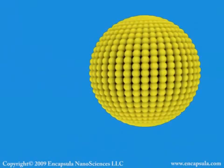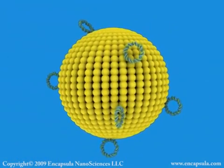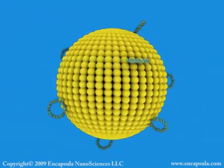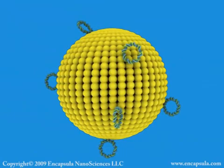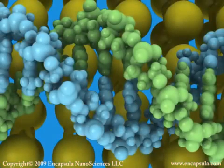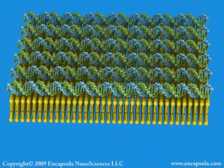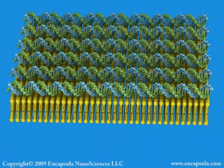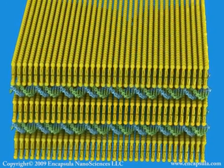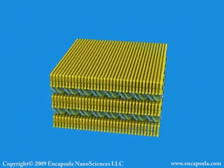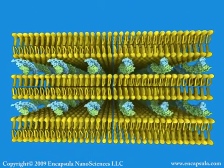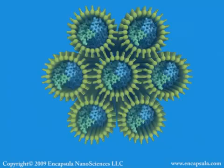Another type of liposome containing positively charged lipids such as DOTAP binds negatively charged nucleic acids to its surface through electrostatic interactions. These so-called lipoplexes can be used to deliver nucleic acids to cells. Some types of lipoplexes sandwich the nucleic acid between the lipid bilayers; however, many studies show that these are less effective delivery vehicles than other types of lipoplexes, which encase the nucleic acid inside hexagonally packed lipid tubes.